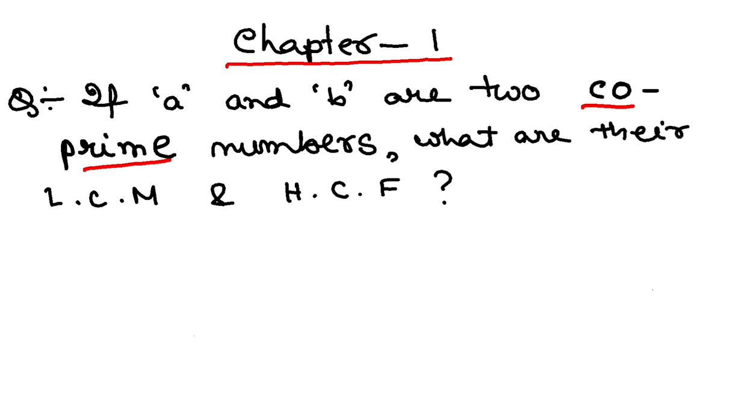Two co-prime numbers can be, let's say, 13 and 17. These are two co-prime numbers because they have nothing common apart from 1. So what is their HCF? As I said, there is nothing common, so the common factor is 1. And what is the LCM? The LCM is 13 times 17 because they have nothing common.